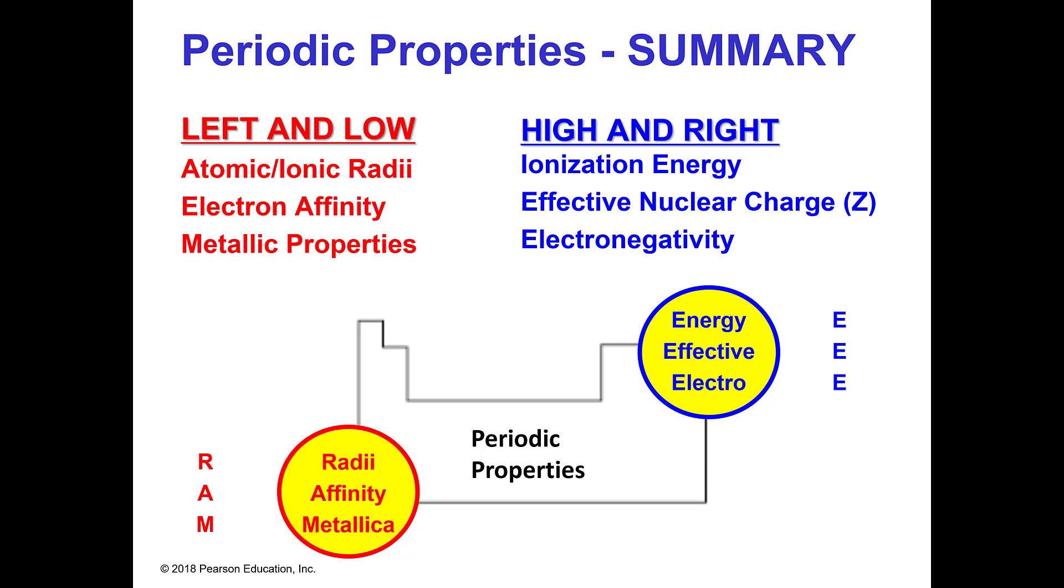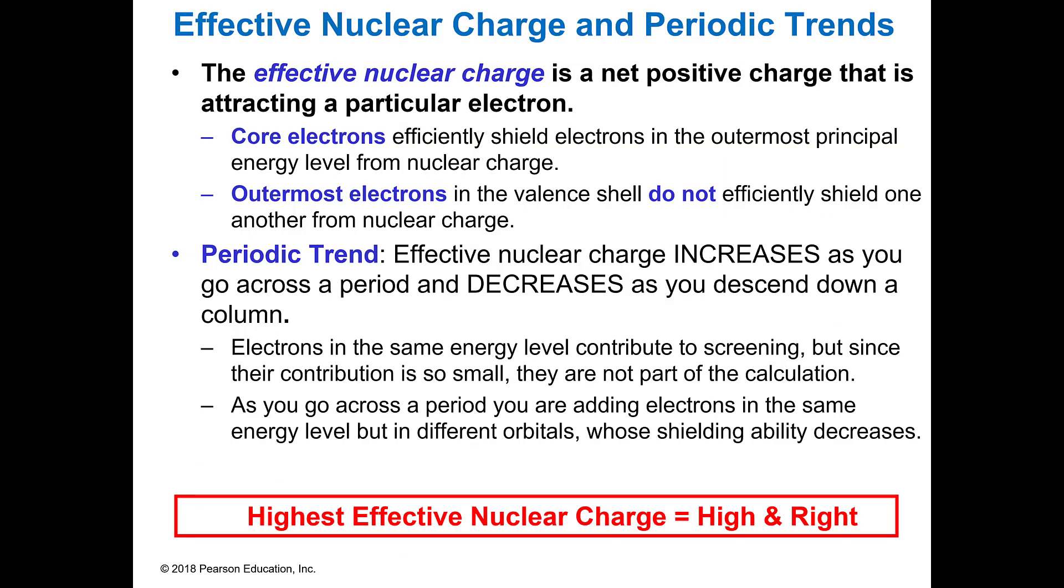Okay, so the first one to look at is effective nuclear charge. And we talked about this a little bit too. It's the net positive charge that attracts the electrons in the nucleus. So those core electrons are shielded from those outermost valence areas. And those outermost valence electrons don't officially shield one another from the nuclear charge.